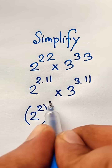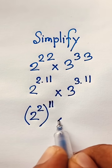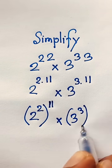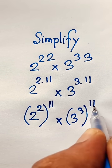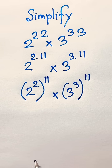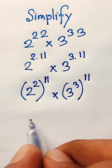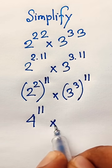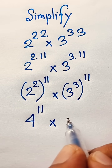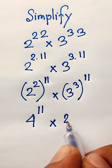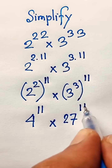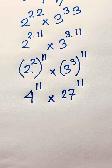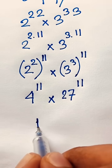This becomes 2 to the power 2, whole to the power 11, times 3 to the power 3, whole to the power 11. Now I can see easily here: 2 to the power 2 is 4, with exponent 11, times 3 to the power 3 is 27, with exponent 11.